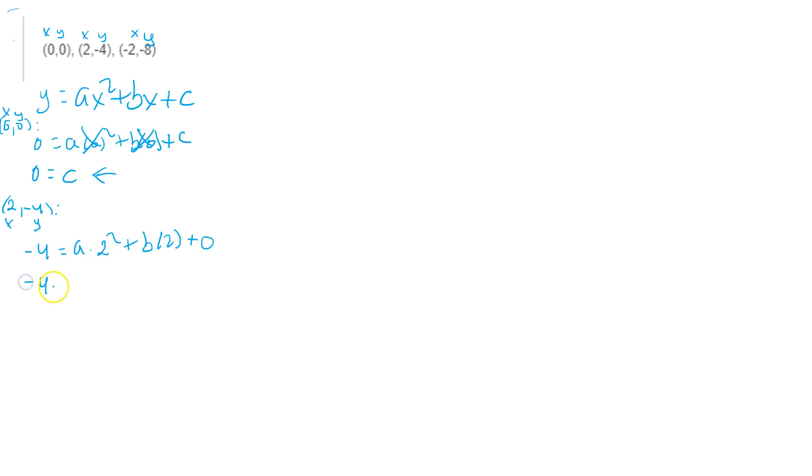Then you simplify this, you're going to have -4 equals 2 squared is 4, so it ends up being 4a. And then this ends up being b times 2, which is 2b. And once this is in place, you also need to do this with the last one.